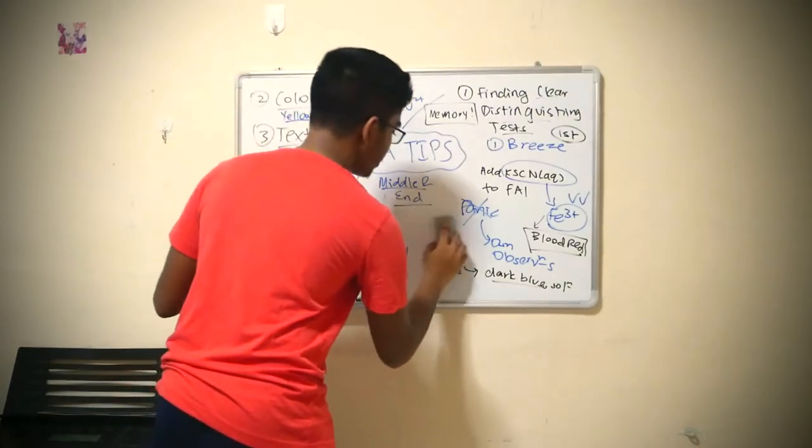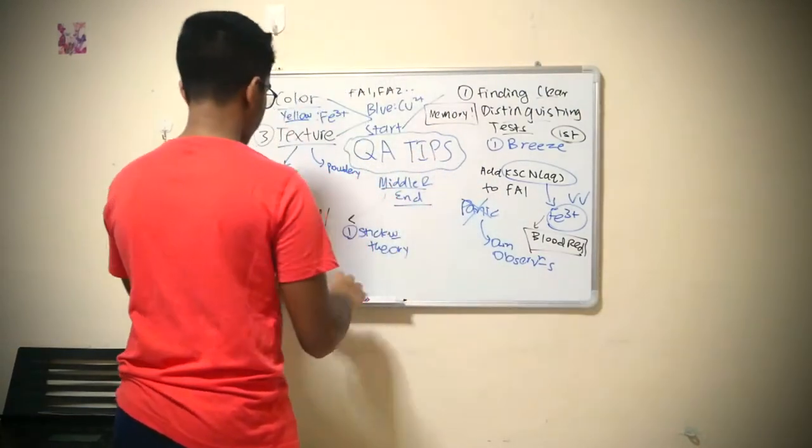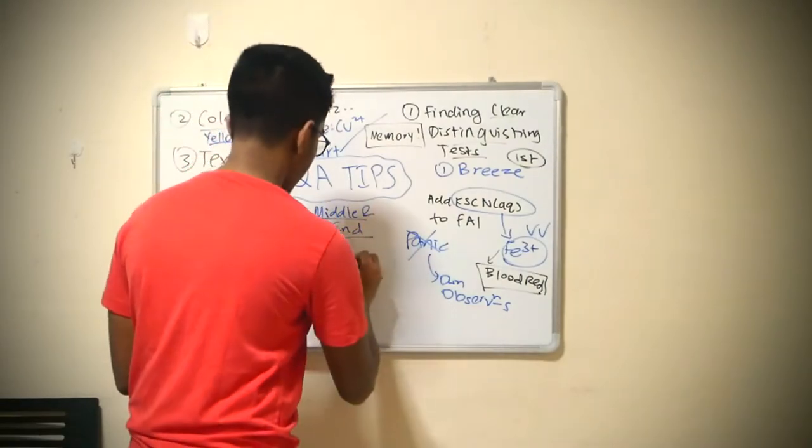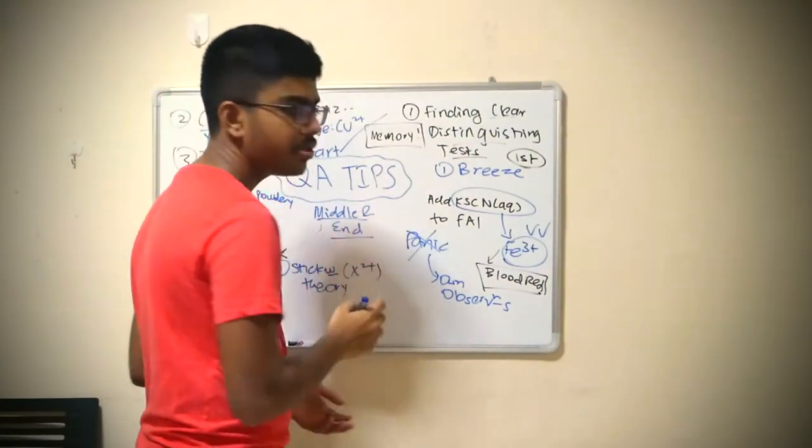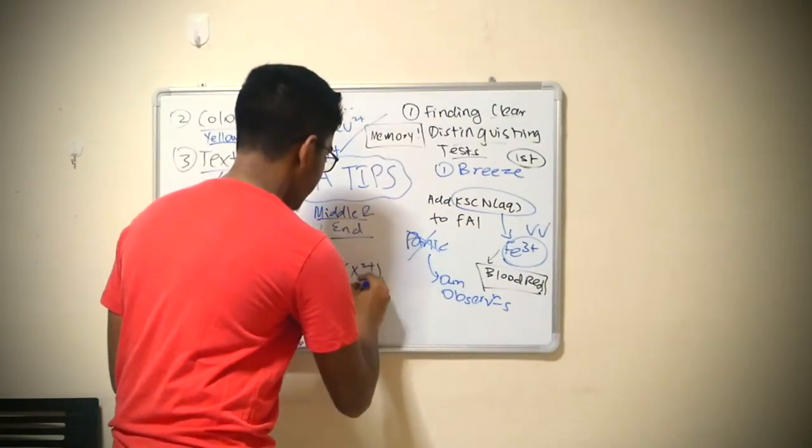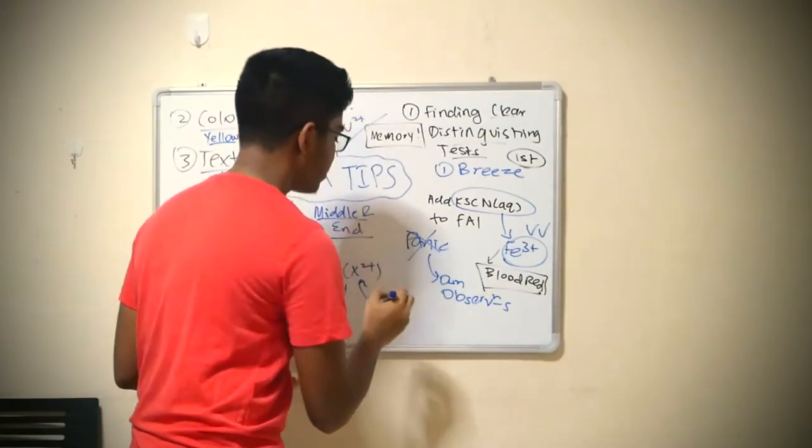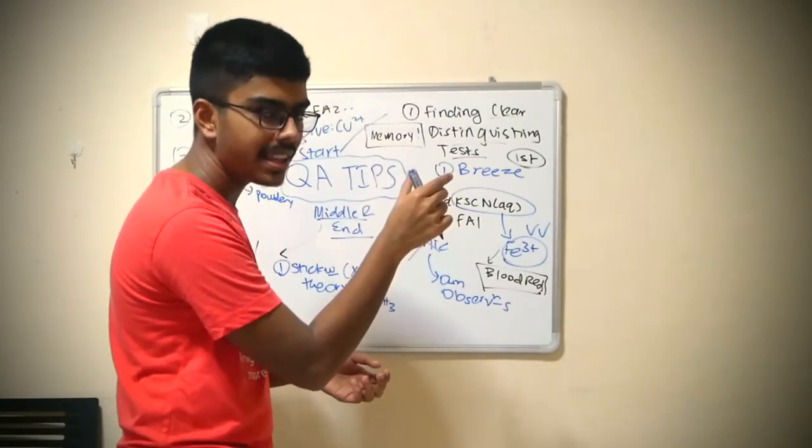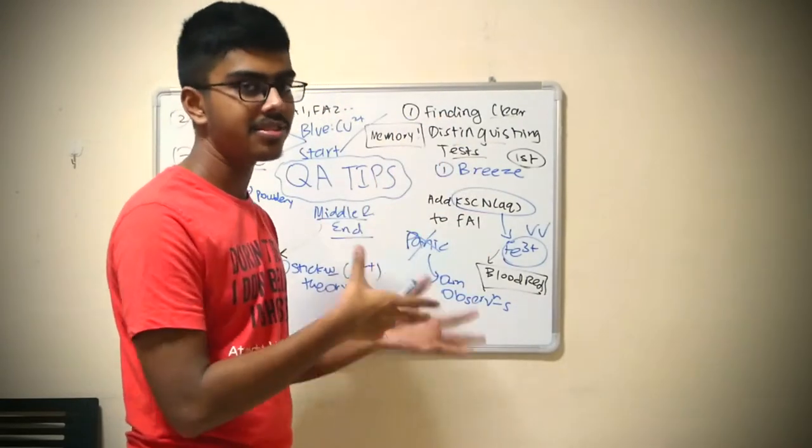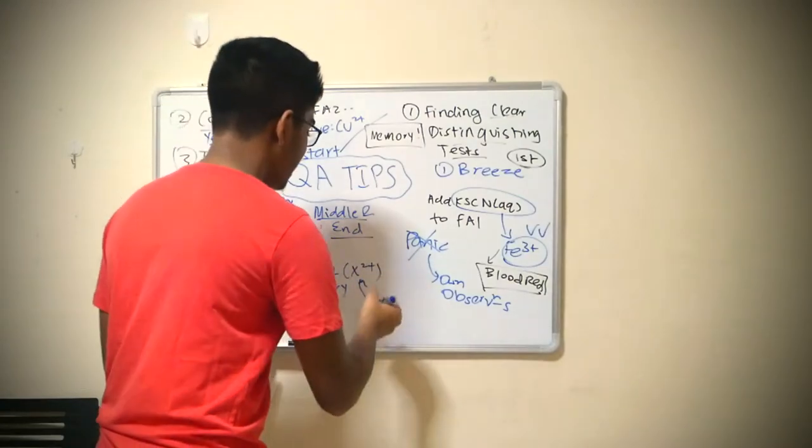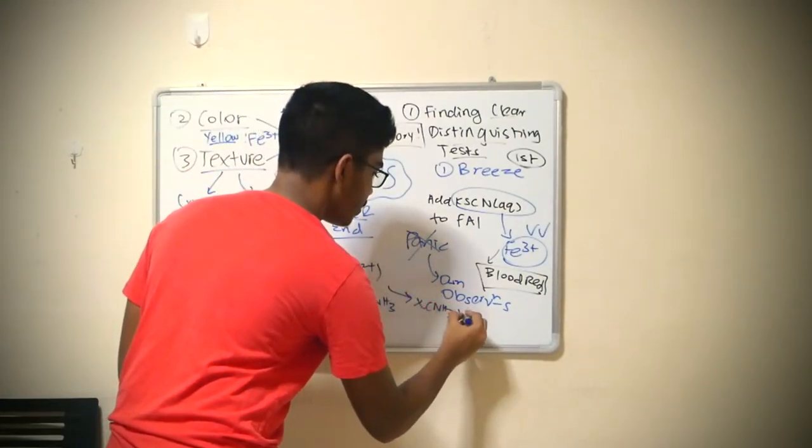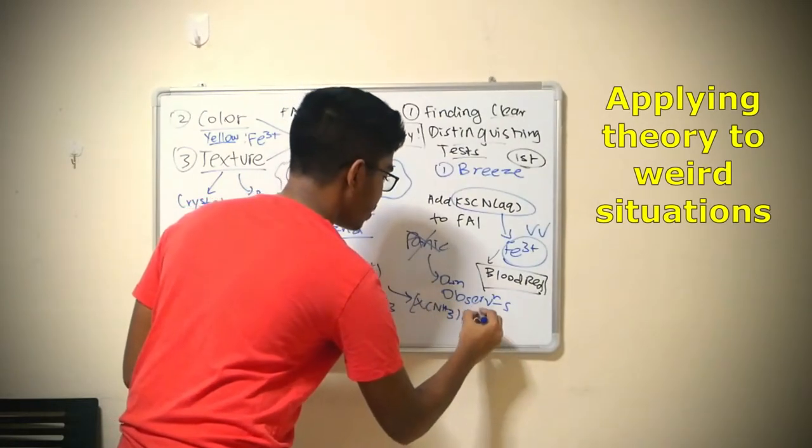Using this analogy right here, if they give you another weird cation, like some X2+, and during the exam they ask you to add NH3, you see weird colors, but you see the same observation. Forms a precipitate and it dissolves to form a colored solution. You most likely will use this formula: X(NH3)4 2+.